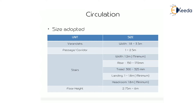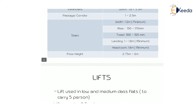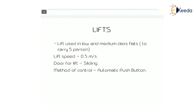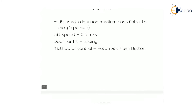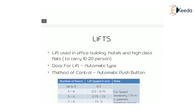Horizontal circulation is done by veranda and passage; vertical circulation is done by staircase and lift. A lift used in low to medium class flats carries 5 persons. The lift speed is 0.5 meters per second, the door is a sliding door, and the method of control is automatic push button — you can observe these things in daily routine life.